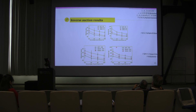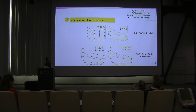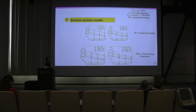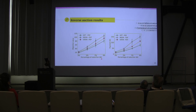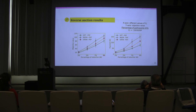In additional experiments, we highlight the difference between using perfect knowledge and our machine-learning-based power saving information. The similarity of these trends further proves the accuracy of our machine learning predictions. In another scenario, we fix the percentage of participants at 60% and vary the percentage of reduction from 3% to 9%. Payment and objective values show a similar trend, and our performance in the red line is much more closely aligned with the optimum compared to the comparison approach.